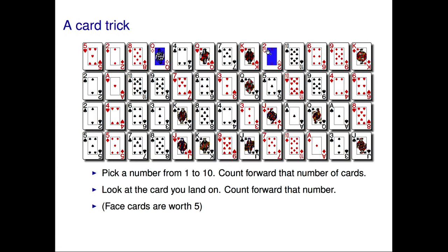We landed on a two — count forward two. Landed on a six — count forward six. Landed on a nine — count forward nine. Landed on another six — count forward six. Landed on an eight — count forward eight. Then count forward five. Landed on a king — count forward five. Landed on an ace — count forward one. And now we've landed on a three, but there are no more cards left — not enough cards to count three spaces ahead. So three is our final card. We're asked to remember the final card that we land on.